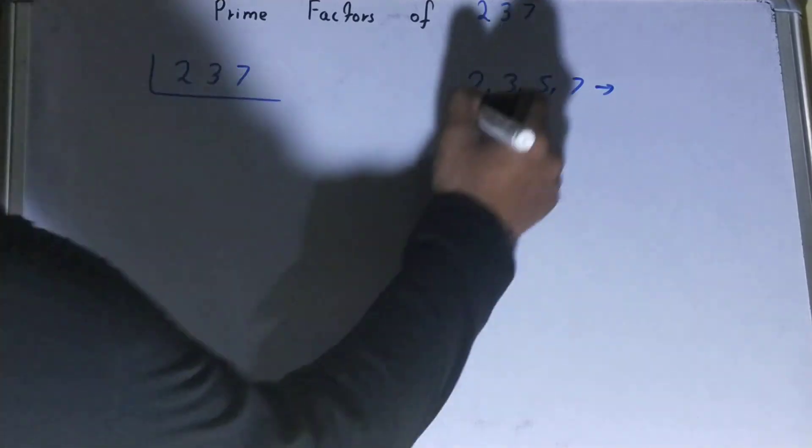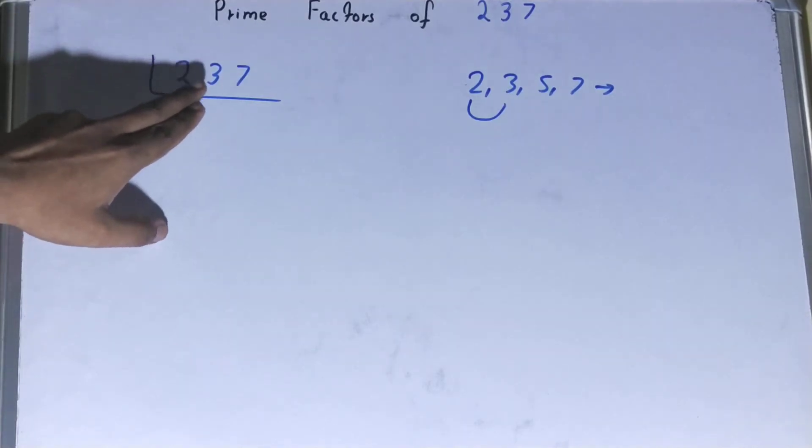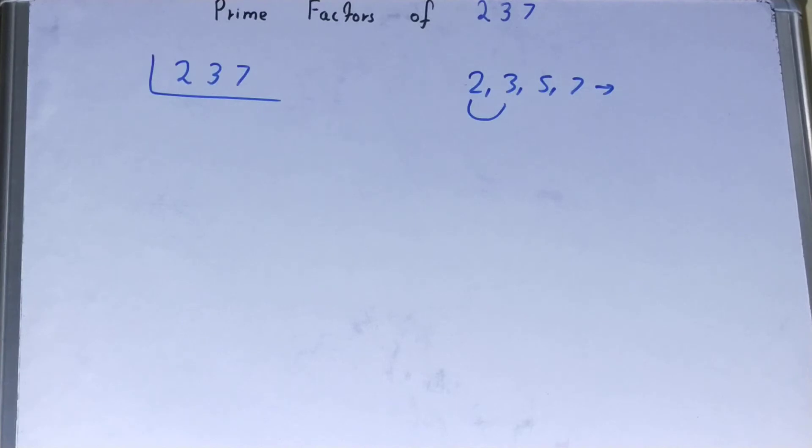Is the number 237 divisible by 3? Let us check. 3 sevens are 21, 27. Yes, it is divisible, so divide it. You get 79.